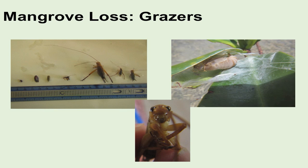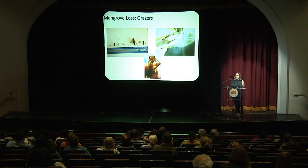Another natural cause can be grazers — organisms that consume mangroves. We have the mangrove tree crab, which actively consumes green leaves; we've found crickets that consume them; and there are of course caterpillars and other larvae. You can also have beetles that bore into the roots and branches, and those can actually disrupt the vascular system, which is a major issue for that plant.